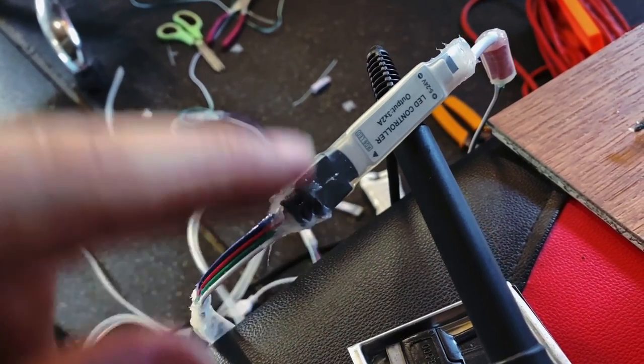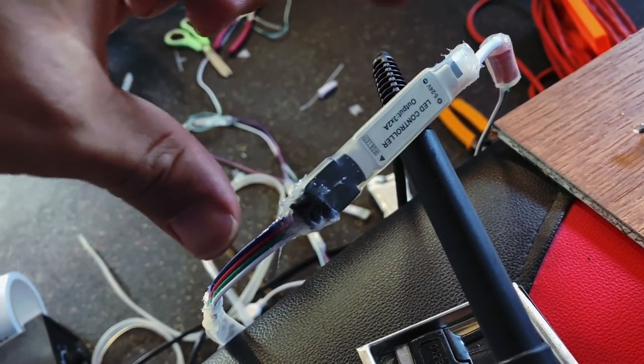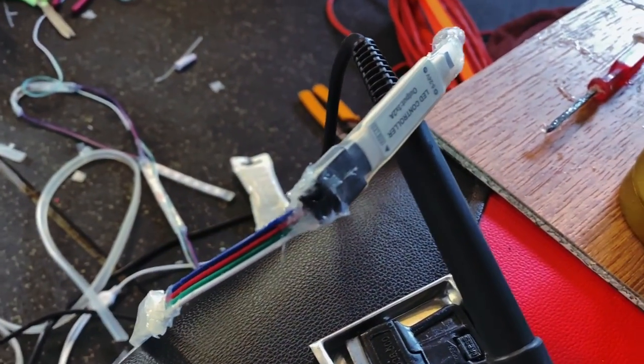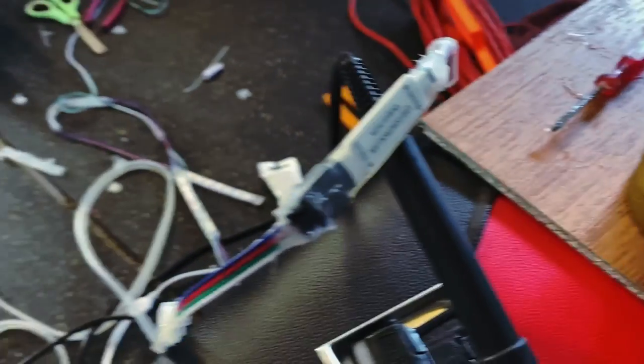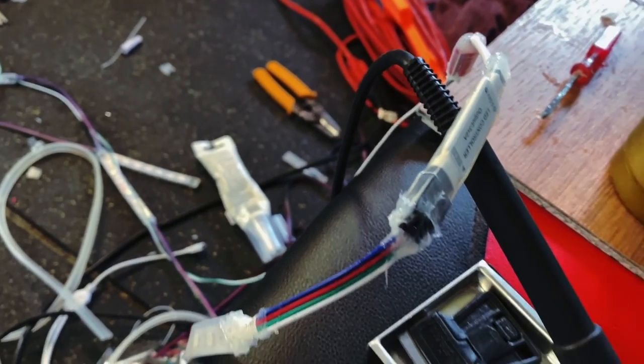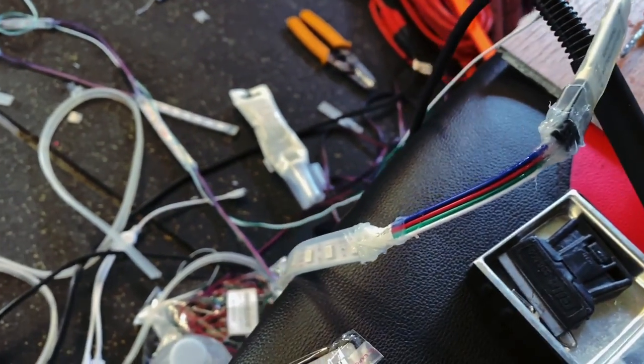Then use silicone to seal it. You see I've sealed it now, and now the controller can get wet in case of rainy weather. Let's go ahead and plug it in and make sure that the LEDs work.